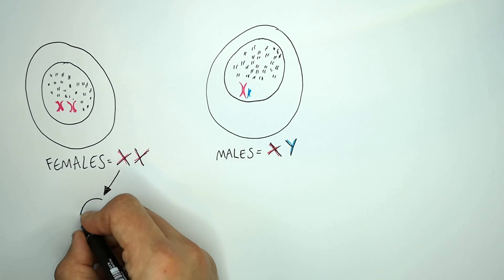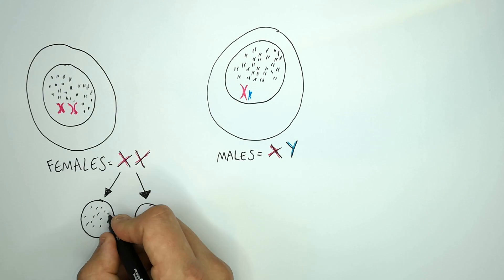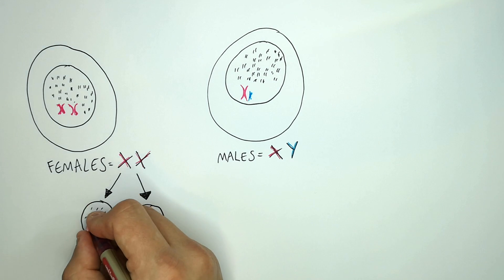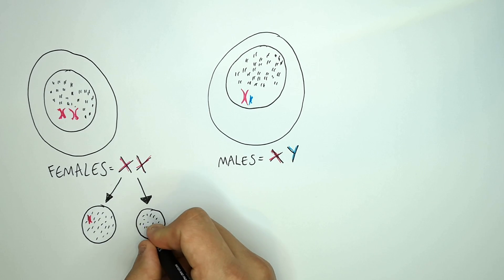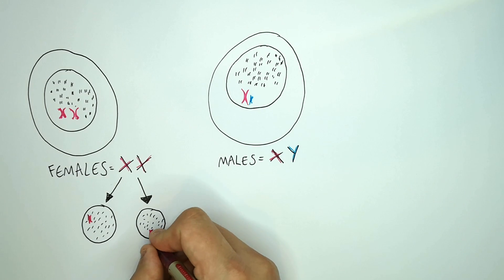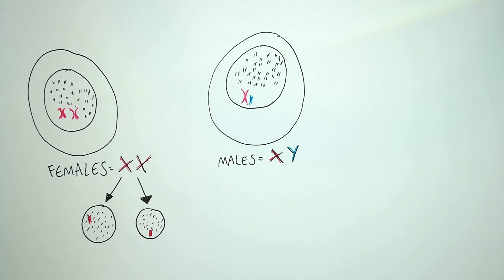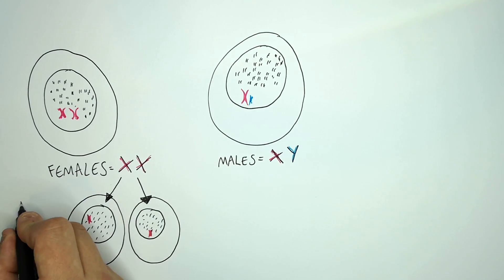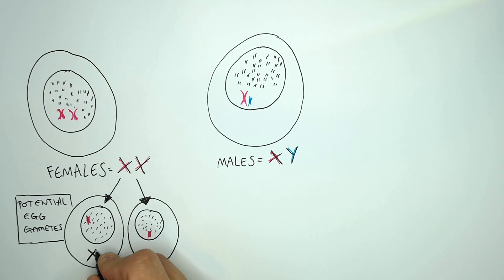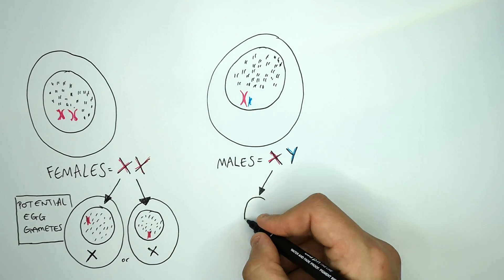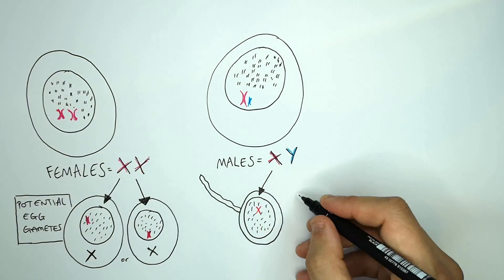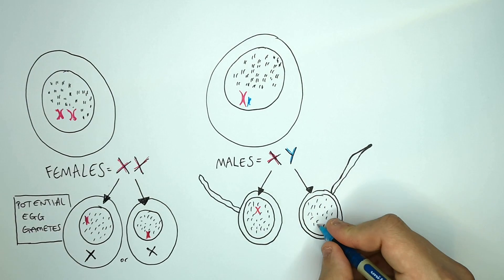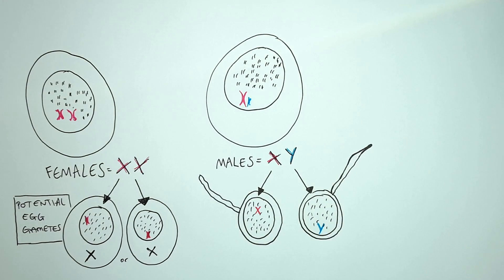The gametes that a female can make will be haploid with 22 chromosomes plus a sex chromosome. The female is going to make gametes with 22 chromosomes plus the final 23rd sex chromosome, which is X. So these are the potential egg gametes for a woman — X or X. In a man, the male sperm can be X or Y, so the sperm can have 22 chromosomes plus an X or a Y chromosome.